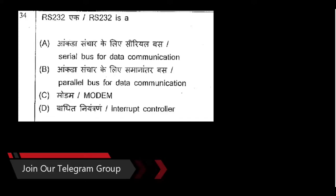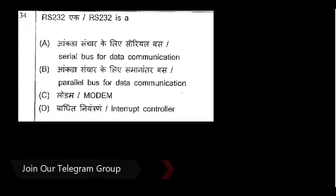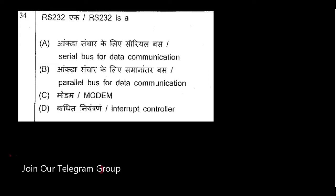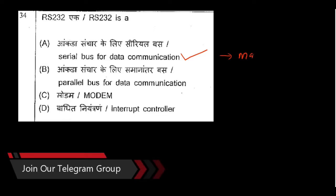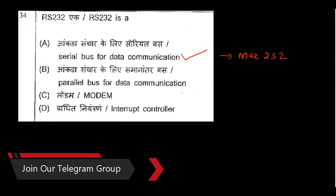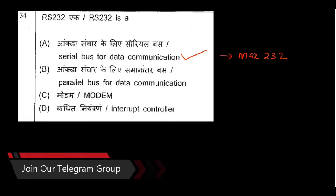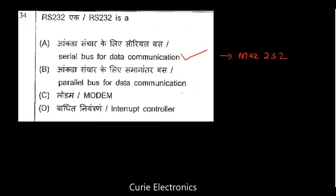Question 34: RS232 is used for serial communication — it is a serial bus for data communication. We generally use one IC called MAX232, which is used to implement RS232 serial bus communication.